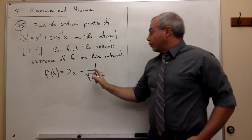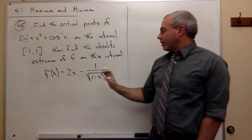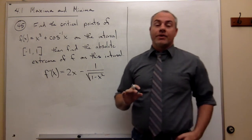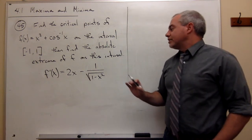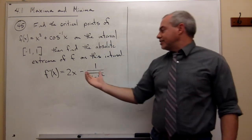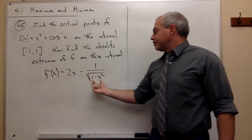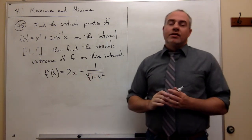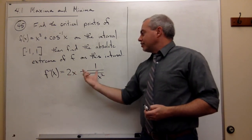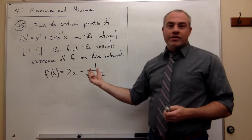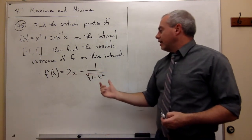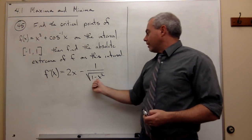So we've got a derivative and now I want to know: is there anywhere where this thing is zero, and is there anywhere where this thing is undefined? To figure that out I need to do a little more work. Since I have two terms here it's a bit harder to solve, so I'd like to make it one fraction first. I'll get a common denominator, which would be the square root of 1 minus x squared.